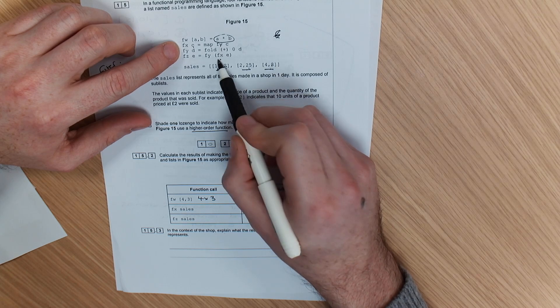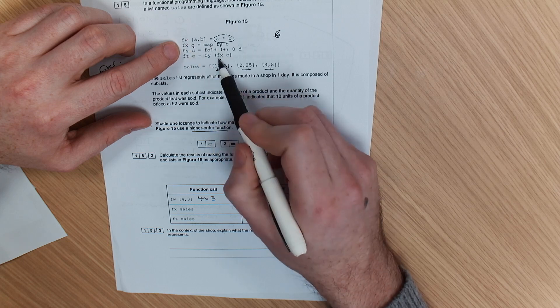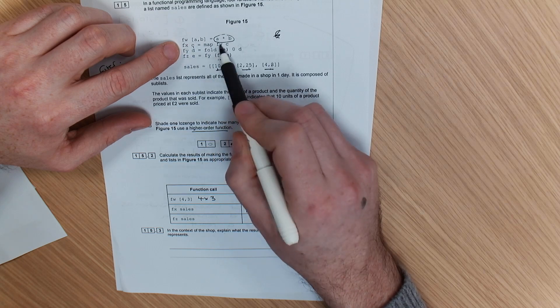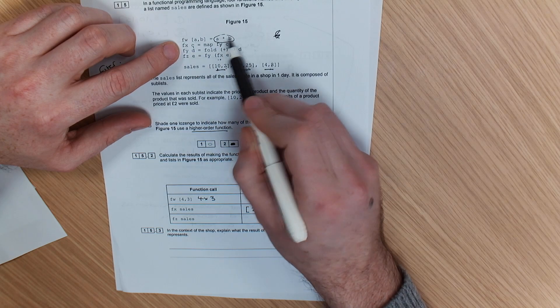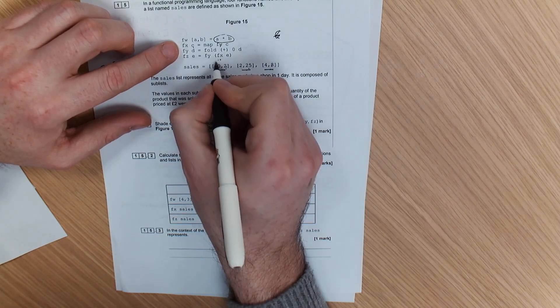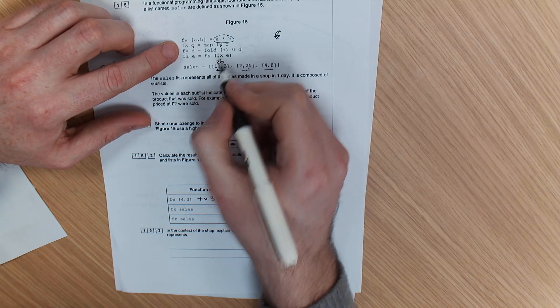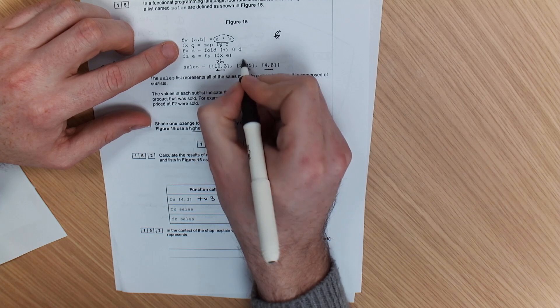So we're using FX, FX, which in itself uses FW there, which is a times b. So remember, we did that, so for FX, we've ended up with this list.